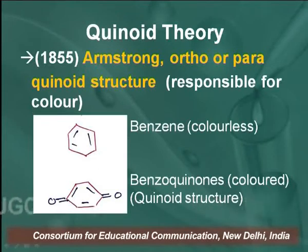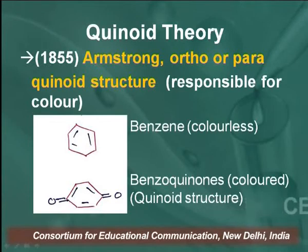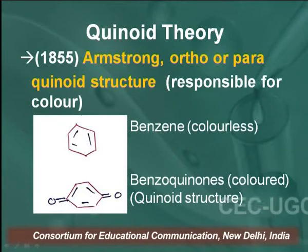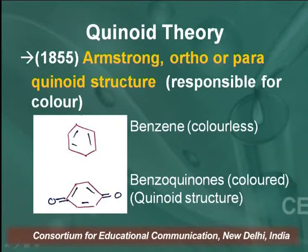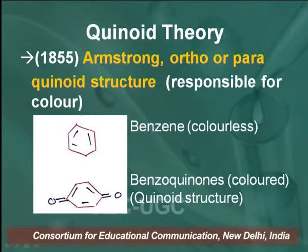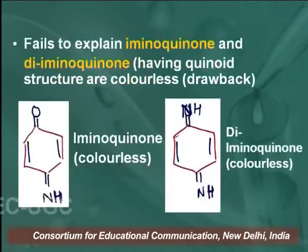For example, benzene has no colour — no chromophore or oxochrome — so it is colourless. The quinoid structure is formed when benzene is attached to two oxygen atoms; this is also called benzoquinone. In benzoquinone, you can see there are 3 pi bonds inside the ring and 2 pi bonds outside the ring. This quinoid structure is responsible for the colour.